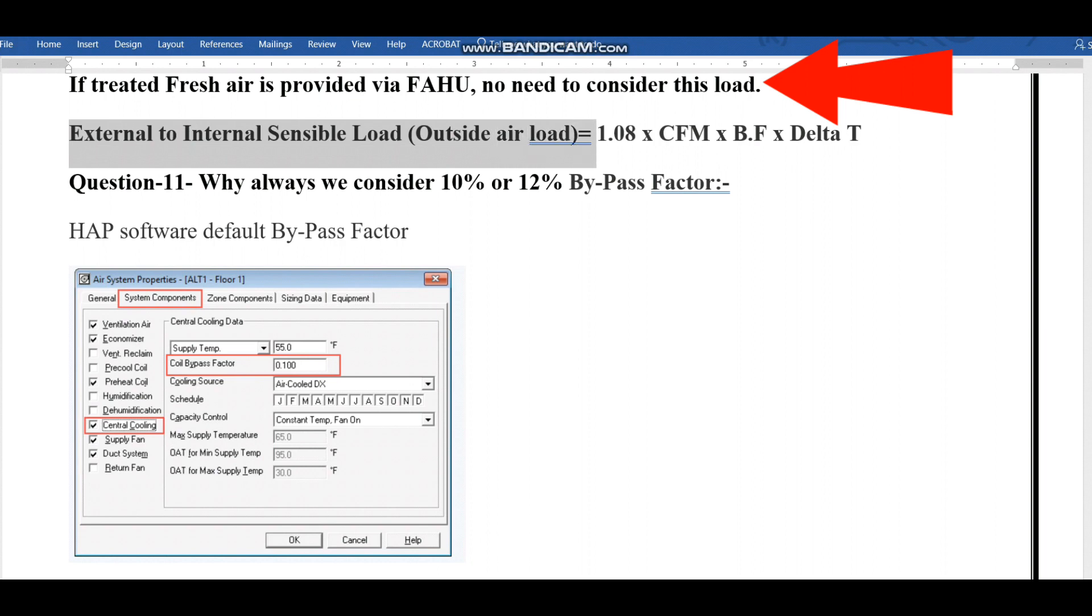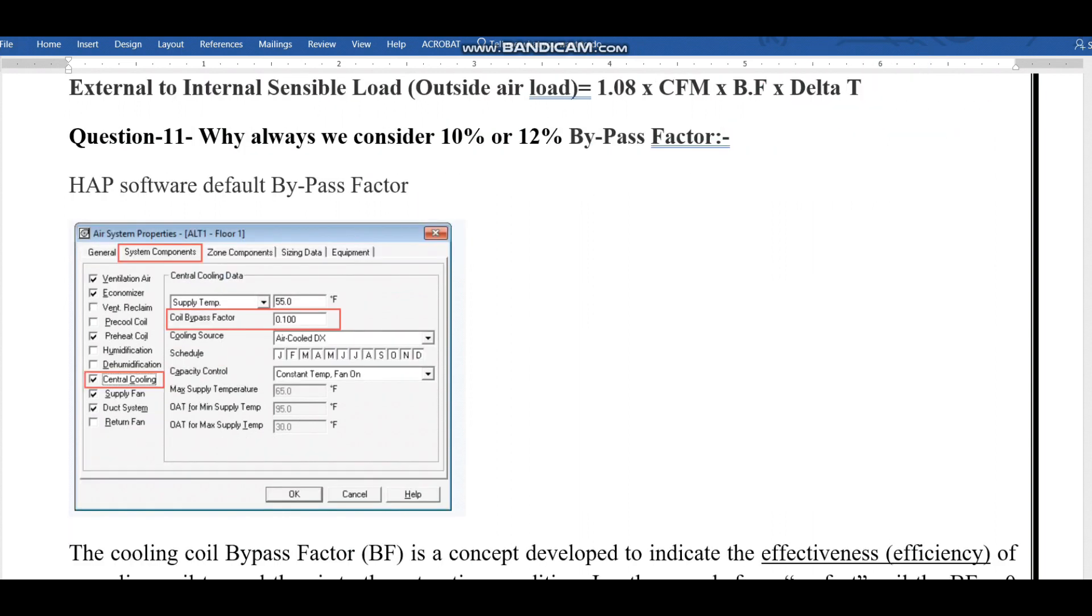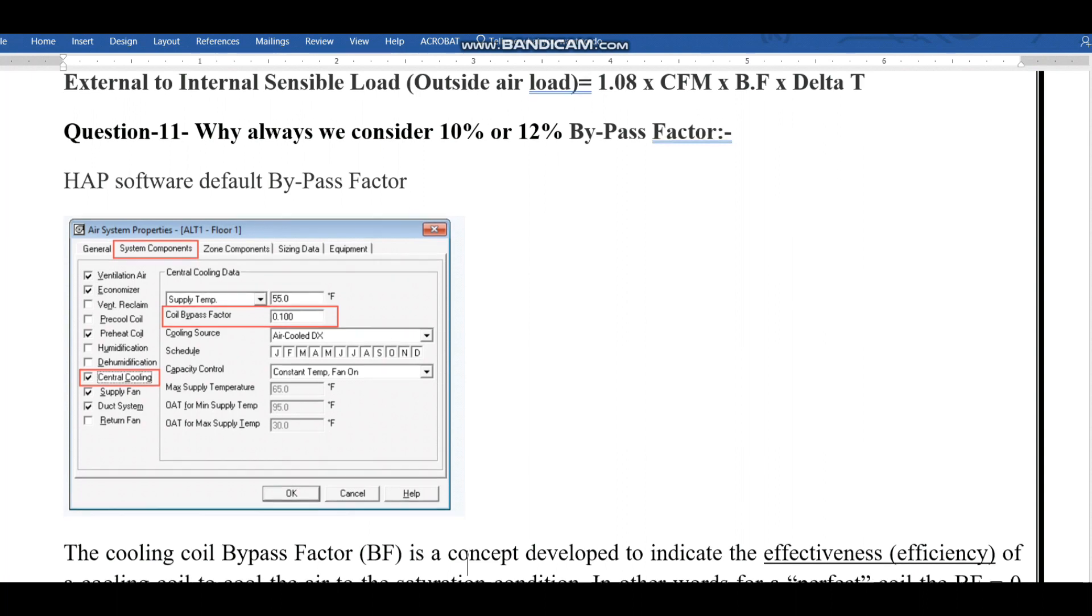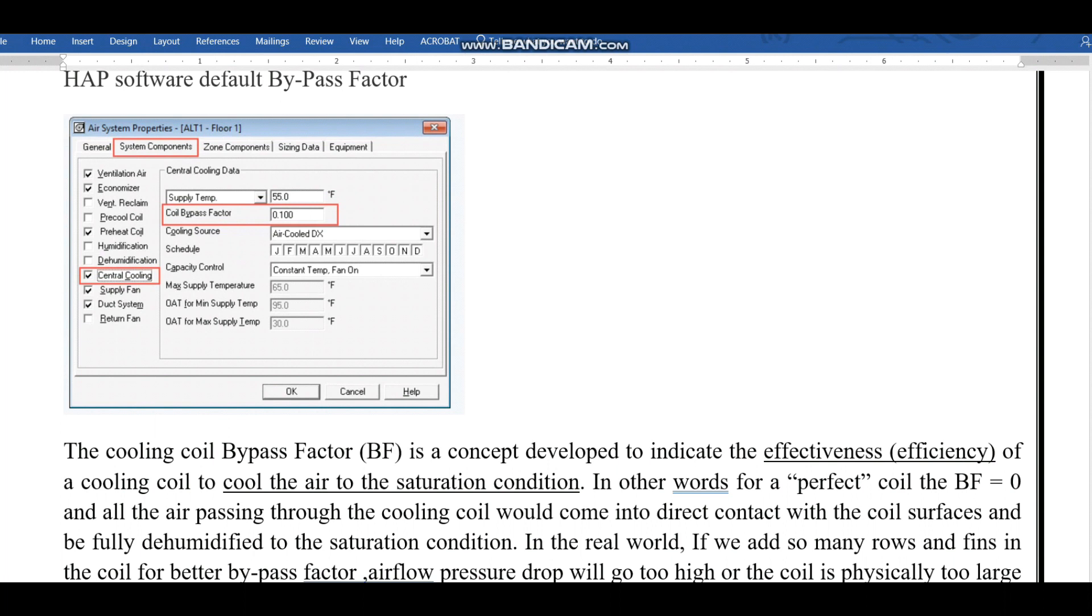Now we have the formula: external to internal sensible load, outside air load, equals 1.08 times CFM times bypass factor times delta T. If you see in the HAP software, by default the coil bypass factor will be 0.1 or 10 percent. If you pass 100 CFM air flow into the cooling coil, not all the air will get cooled, so some amount will escape. That escaped air is called bypass.